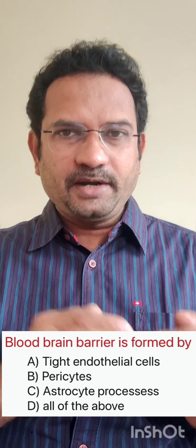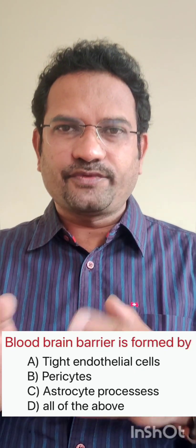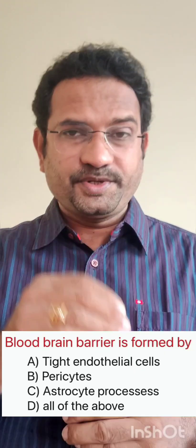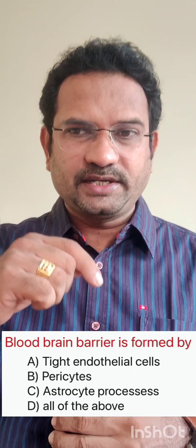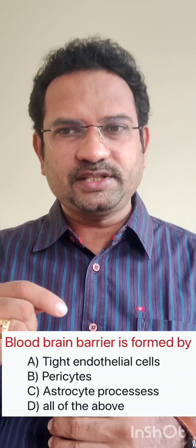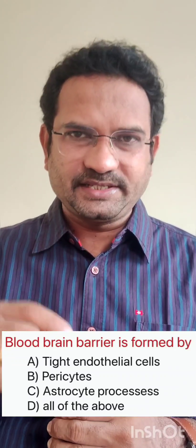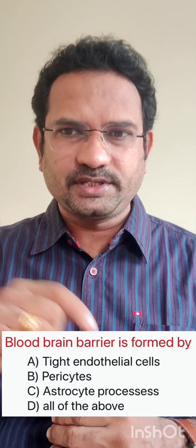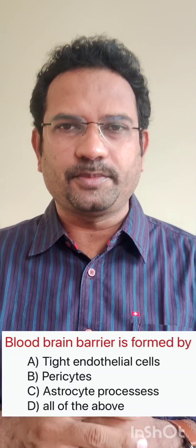Now let us go to the next question. Blood-brain barrier is formed by? Options are: tight endothelial cells, pericytes, astrocyte processes, all of the above.